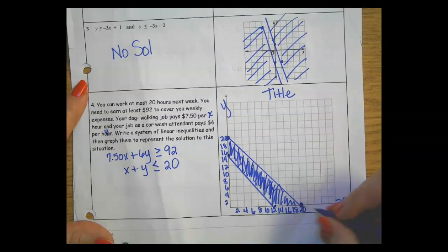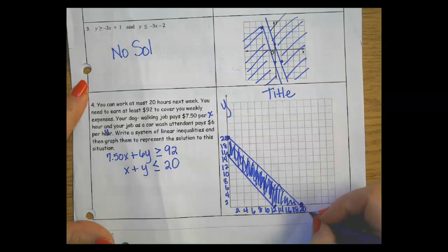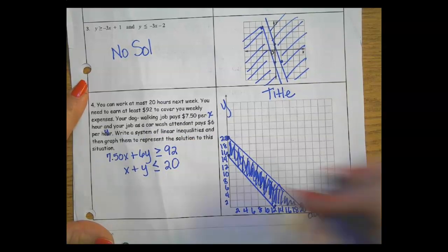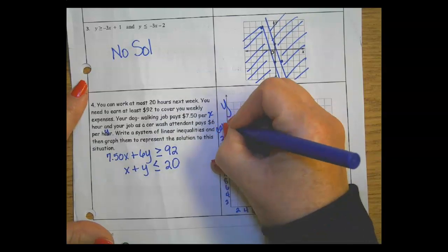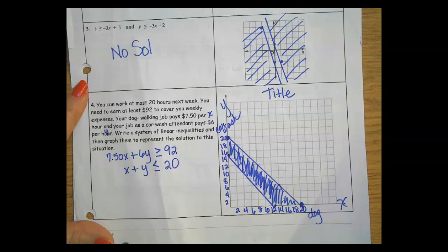Since this is my x, what did we say our x was? Our x was dog walking hours and our y was car wash hours. Something like that.